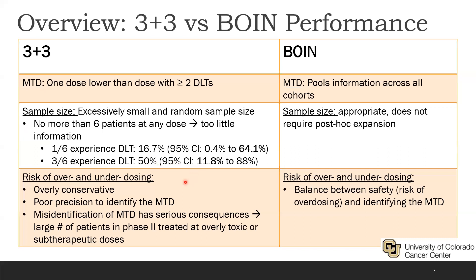Additionally, the 3+3 design is considered overly conservative. While that might sound good, poor precision to identify the MTD is a problem both in terms of overly toxic and subtherapeutic doses. If a drug moves from Phase I to Phase II and the MTD was a subtherapeutic dose, it could overlook a drug that might be beneficial at a higher dose and is also a waste of resources. BOIN does a better job of balancing safety and identifying the maximum tolerated dose.